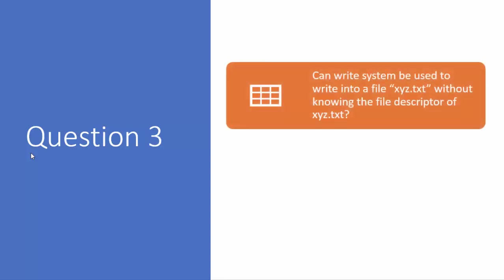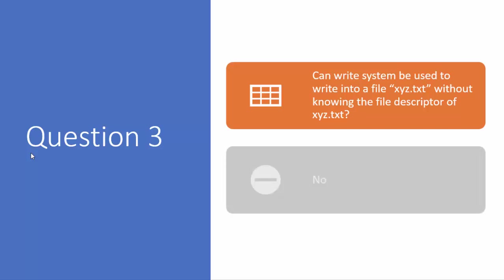Question number three: can the write system call be used to write into a file xyz.ext without knowing its file descriptor? The answer is no, because we can use write, read, or any other system call only if we have the file descriptor. Without knowing the file descriptor we cannot do it. The corresponding follow-up: how to get the file descriptor? The answer is the open system call.